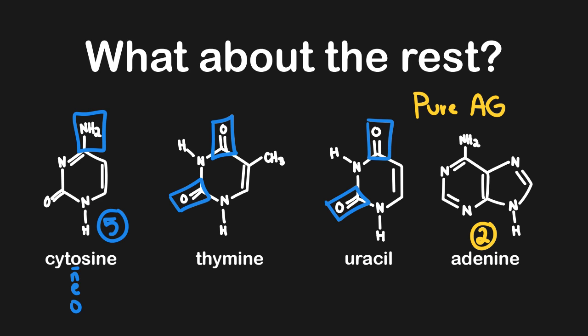Now we have to decide between thymine and uracil. Remember, they have the exact same structure except thymine has an additional methyl group — that's what the 'thy' in it stands for. If that's the only difference, thymine has to be heavier because it has an additional carbon. Therefore, thymine has to be the heaviest of all the pyrimidines — the third heaviest overall — and uracil will be the fourth heaviest. We used the structures and what we know about them rather than brute-force memorization.